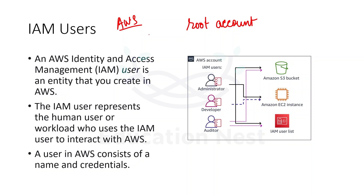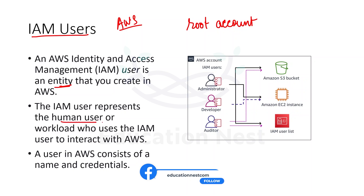According to their credentials or their job role, we can assign permissions to access different kinds of resources. To give them their credentials — their username and password — we create something called an IAM user. It is nothing but an entity that you create in AWS so that the user can access the AWS platform and we can give the required permissions to that particular user.